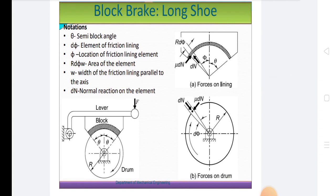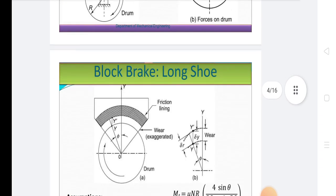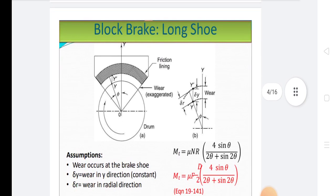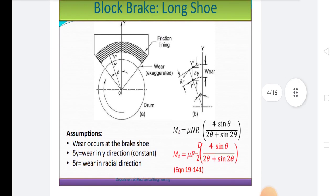In single block brake, all forces are acted as shown in figure. Also in double block or shoe brake, when a single block brake is applied to a rotating drum, an additional load is produced on the shaft bearing due to the normal reaction. This additional load produces bending of the shaft.